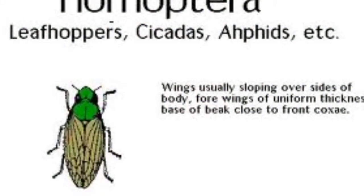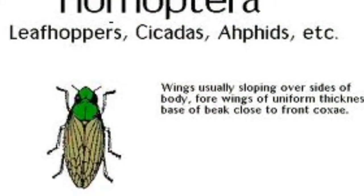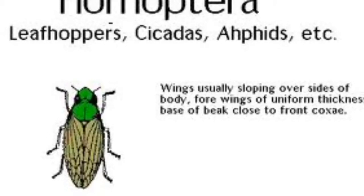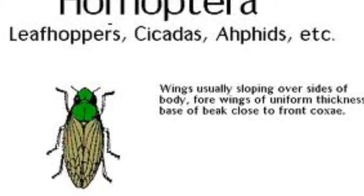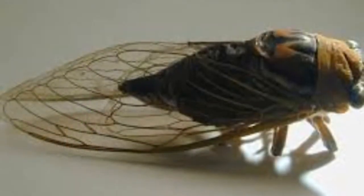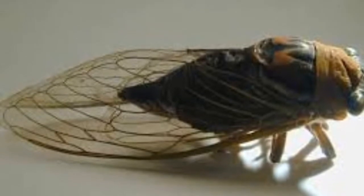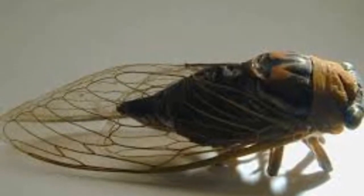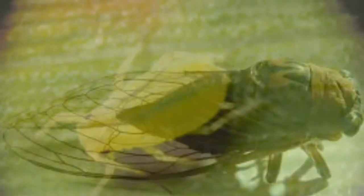So, today we're going to be talking about the order of Homoptera. It fits in with the five major characteristics, because it does. It has an exoskeleton, joined legs, segmented bodies, molting, open cystic circulars, stuff like that.